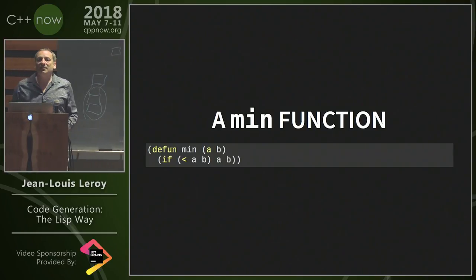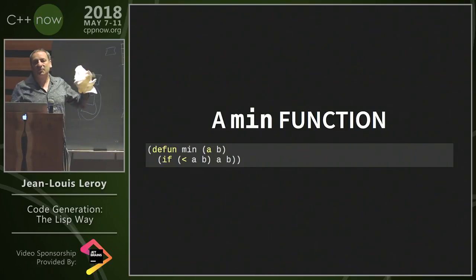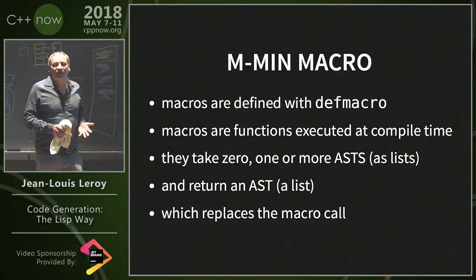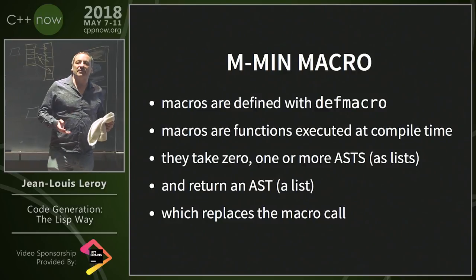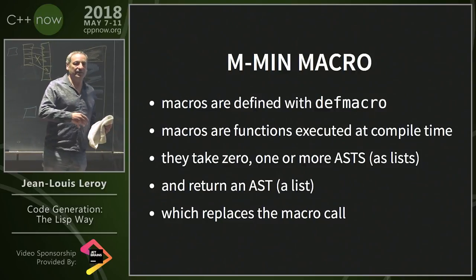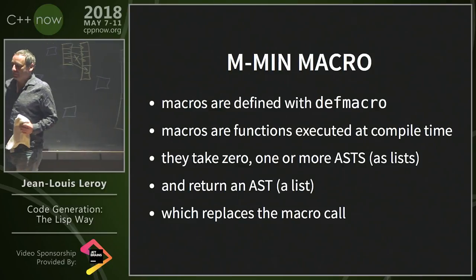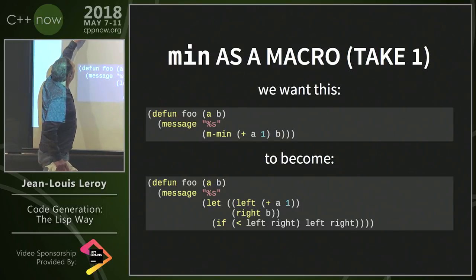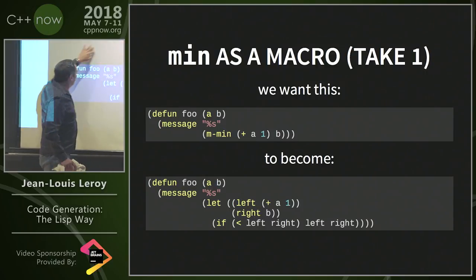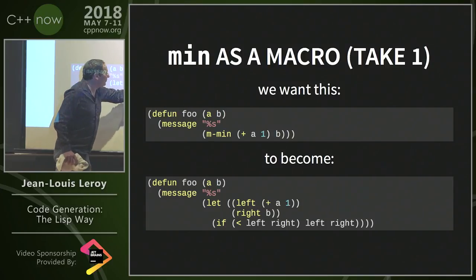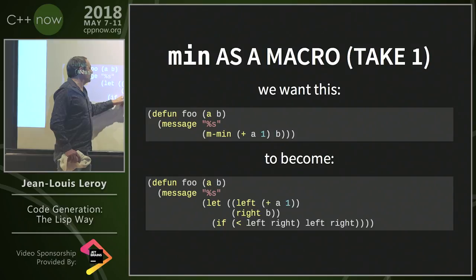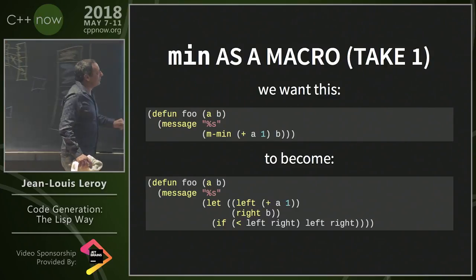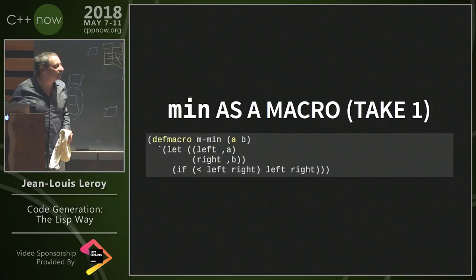That's typically the sort of function you might want to turn into a macro. In C++, we have the problem of evaluating the same expression more than once. In Lisp, macros are defined using `defmacro`. They are functions executed at compile time that receive one or more ASTs and return an AST, which is injected into the calling code as a replacement for the macro call. We'd like the min macro to expand so that the first argument is stored in `left`, the second in `right`, and both expressions are evaluated only once.